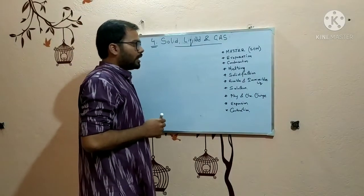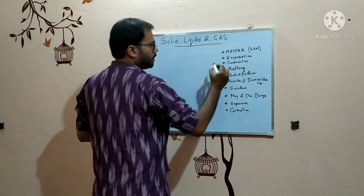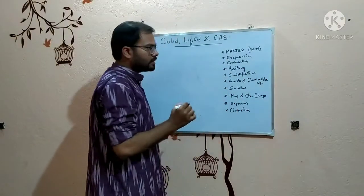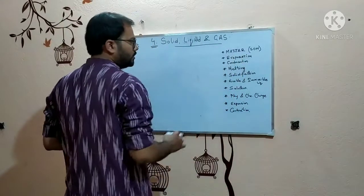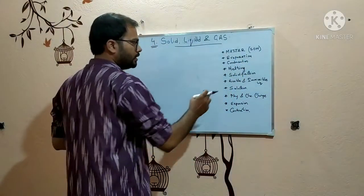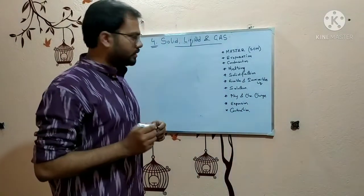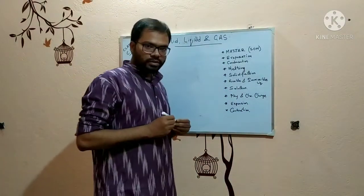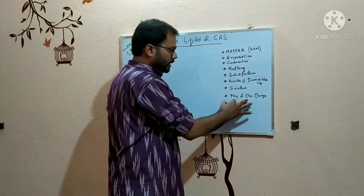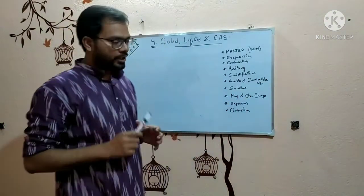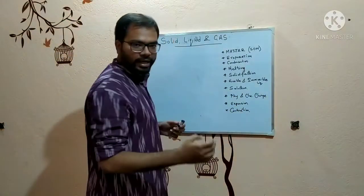So what are the topics in this chapter? We have matter, or I can say states of matter. Then we have evaporation, condensation, melting, solidification, miscible and immiscible liquids, then we have solution and its types also. After that we have physical and chemical change — this is very important — and then we have expansion and contraction.